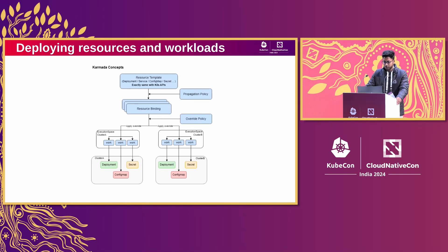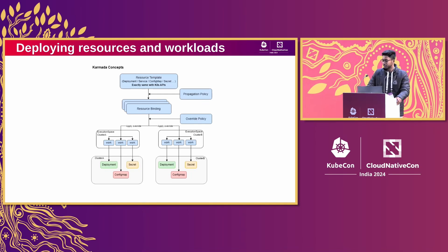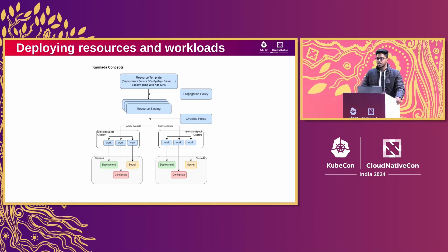Here is how the deployment works. First, you apply a vanilla Kubernetes config file — your deployments, services, config maps. After deploying the Kubernetes manifest, you need a propagation policy, which is a configuration that defines where your resources should be deployed, i.e., which cluster. You provide a propagation policy with your manifest and deploy the workload. Optionally, you can also override some parameters from your workload file using the override policy — for example, using a different container image for a cluster in another region, or a different storage class for a different cluster.